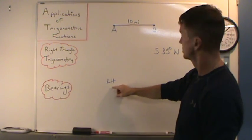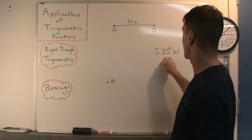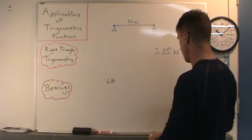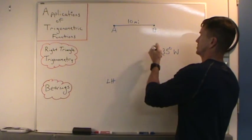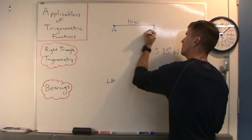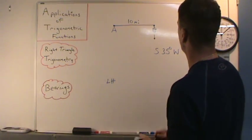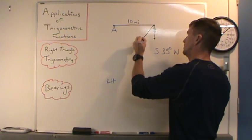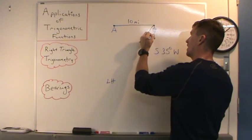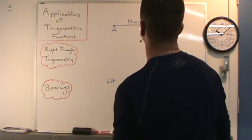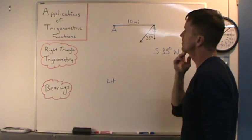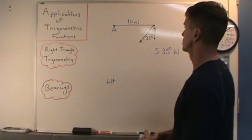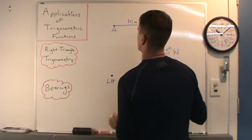You're told that the bearing from Ship B to the lighthouse is S 35 degrees W, which we read as 35 degrees west of due south. So we draw due south from Ship B, go straight down, and go 35 degrees to the west — there's that 35 degree angle. In this problem, we have to determine the distance from Ship B to the lighthouse.